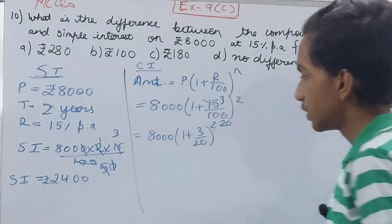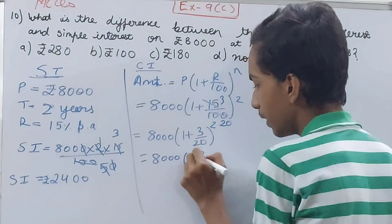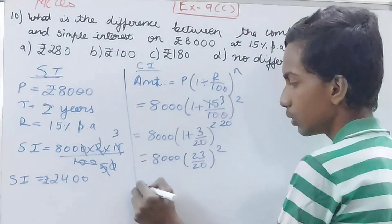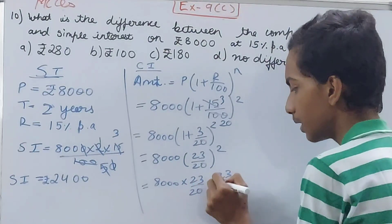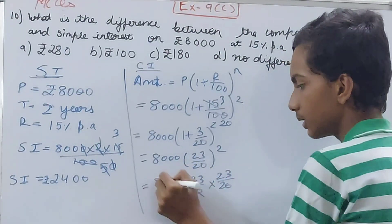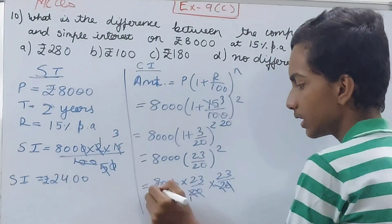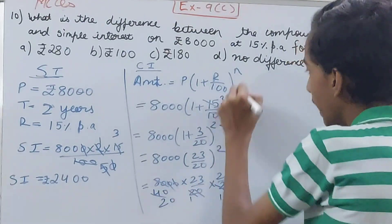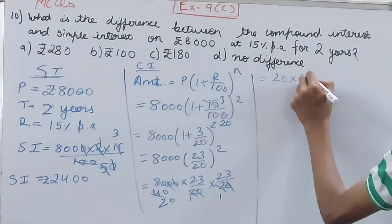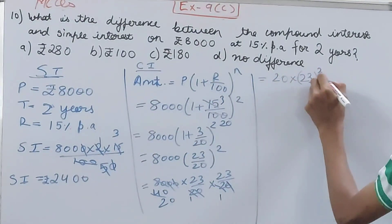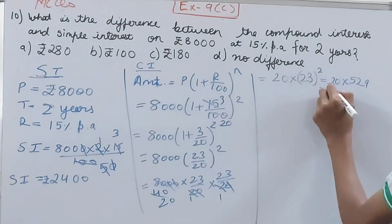So you have 8000 into 23 by 20 whole square, which is 8000 into 23 by 20 into 23 by 20. Cancel these zeros - I'll cancel by 2, so at last I am left with 20 into 23 square. You have 20 into 529, which is the square of 23.